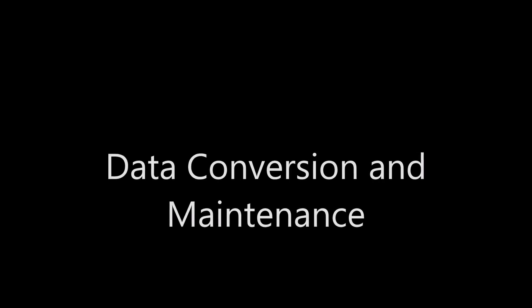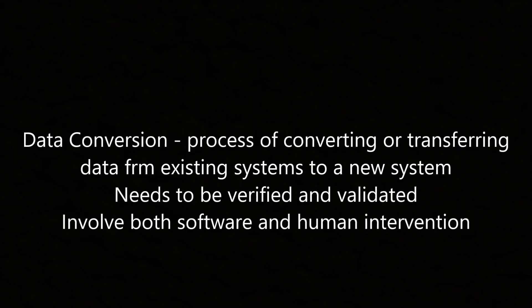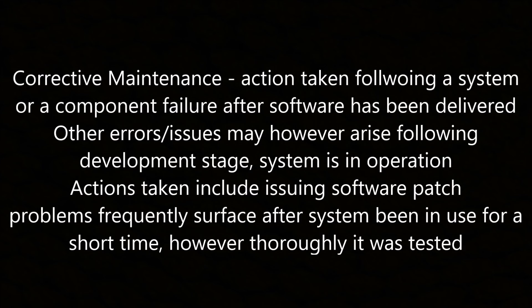Data conversion and maintenance. Data conversion is the process of converting or transferring data from an existing system to a new system; it needs to be verified and validated and involves software and human intervention. System maintenance forms an important part of the development process as it ensures the system continues to run smoothly following implementation. All software requires maintenance. Corrective maintenance is when action is taken following a system or component failure after the software has been delivered. Actions taken include issuing a software patch; problems frequently surface after the system has been in use for a short time however shortly it was tested.